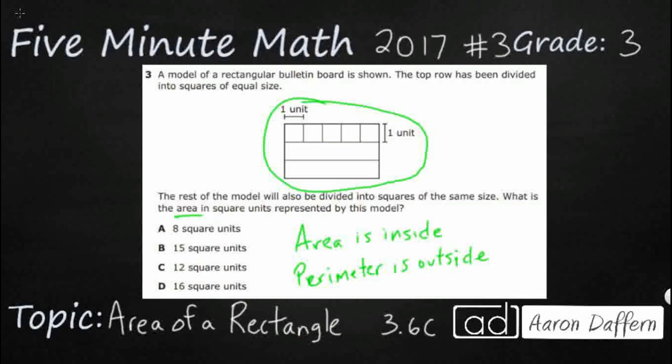So what we're going to do is just put little squares. Now each square has to be the same size. These squares are just one unit. Sometimes they'll say feet, inches, or meters, but in this case they just say one unit. Unit just means anything. Let's just extend out these lines because if we extend out these lines, we can go ahead and finish.